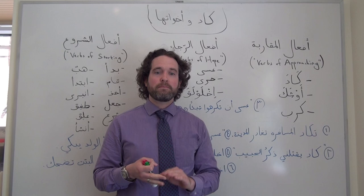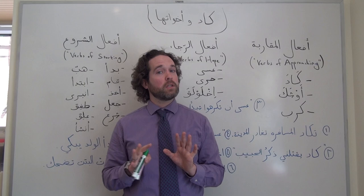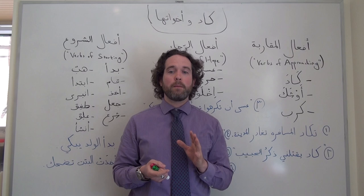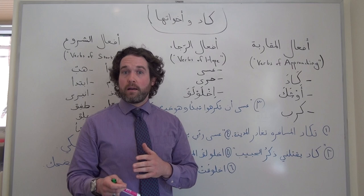Each of these categories has some synonyms, and I've included them all here. Some of them are very formal, or rather archaic, but I'm including them all here for the sake of thoroughness and completeness. When we're talking about كَادَ or one of its sisters in a sentence, we use the same terminology that we use with كَانَ and its sisters, or إِنَّ and its sisters.